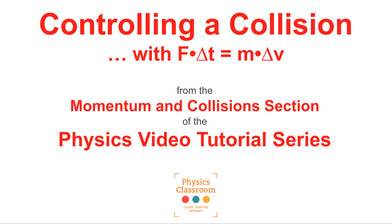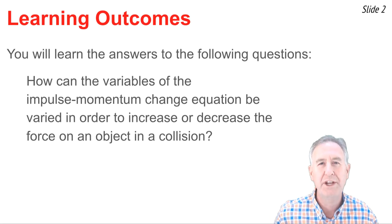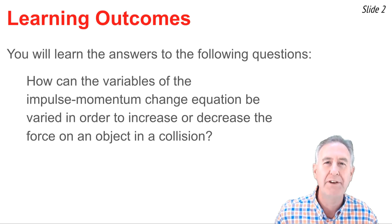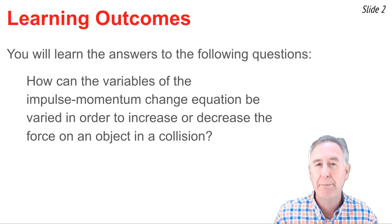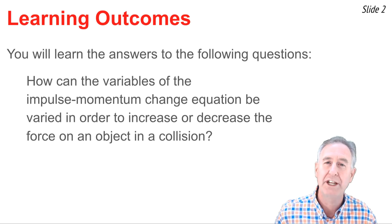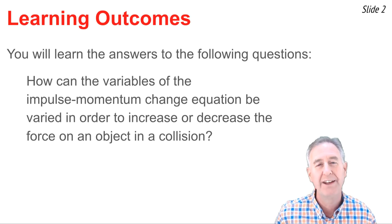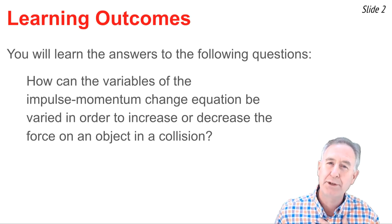Welcome to the Physics Classroom's video tutorial on momentum and collisions. The topic of this video is controlling a collision with the F delta T equals M delta V equation. We wish to figure out how the variables of the impulse-momentum change equation can be varied in order to increase or decrease the force that an object experiences during a collision. I'm Mr. H.